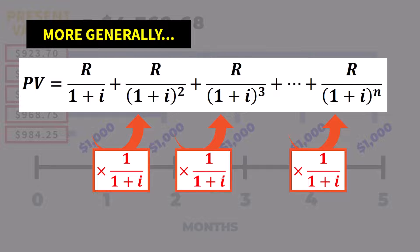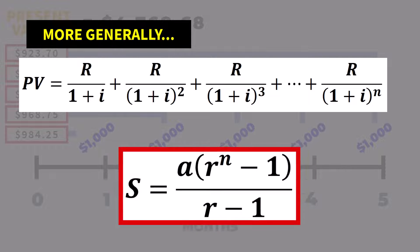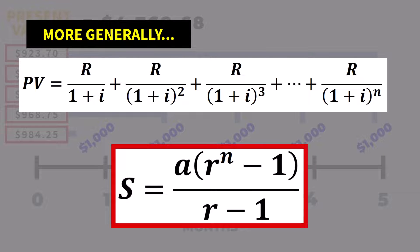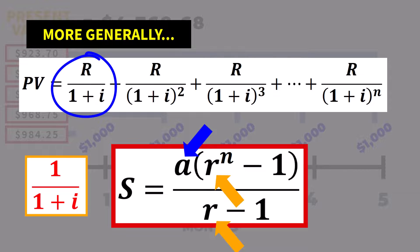The sum of any geometric series with a finite number of terms, such as this one, can be calculated using this formula. Its derivation has been discussed in another video, where A is the initial value in the series, R is the common ratio, and N is the total number of terms.